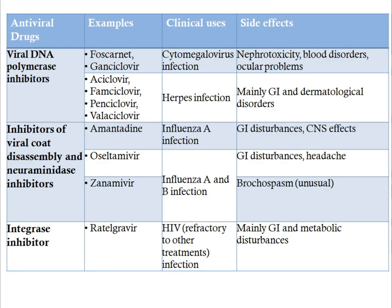The next important class is viral DNA polymerase inhibitors, where foscarnet and ganciclovir are included, along with acyclovir, famciclovir, penciclovir, and valacyclovir. Acyclovir is converted into monophosphate by viral thymidine kinase, and further converted into triphosphate, which is the active form that inhibits the DNA polymerase of the virus. Clinical uses include cytomegalovirus infection and herpes infection. Side effects are nephrotoxicity, blood disorder, ocular problems, and mainly GI and dermatological disorders.